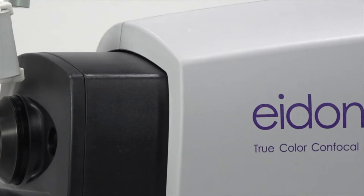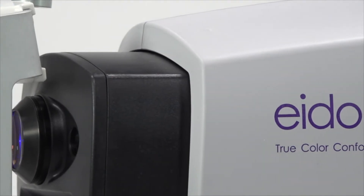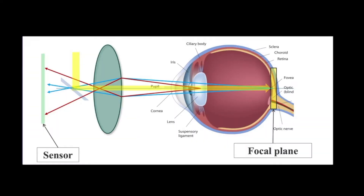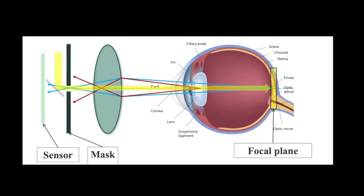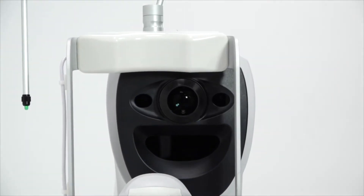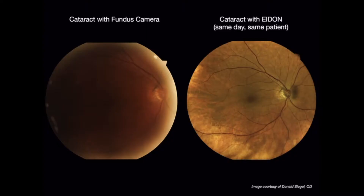Confocal imaging is known in eye care as a new standard of excellent image quality. The primary characteristic of confocality is to block the backscattered light from layers outside the focal plane. The confocal technology allows for preserved image quality in the case of media opacities, including cataracts.